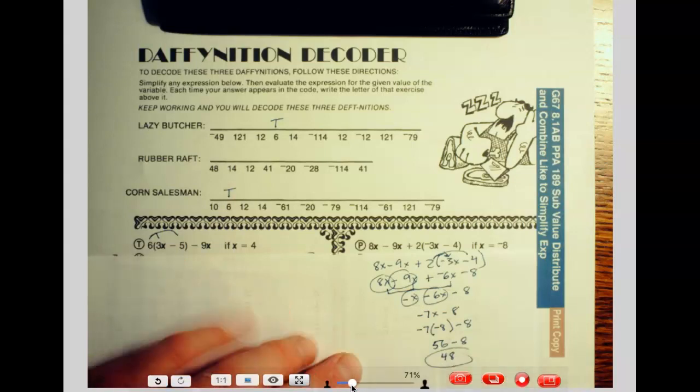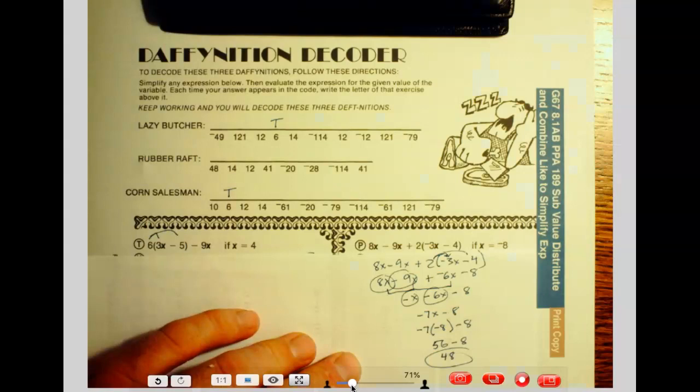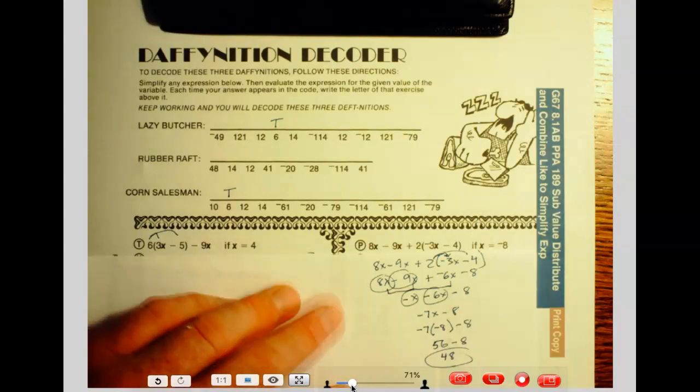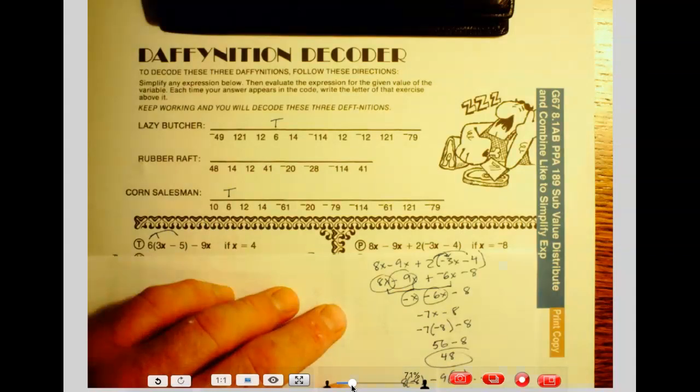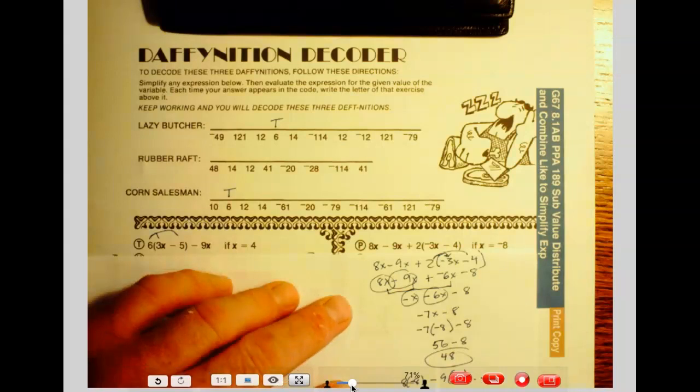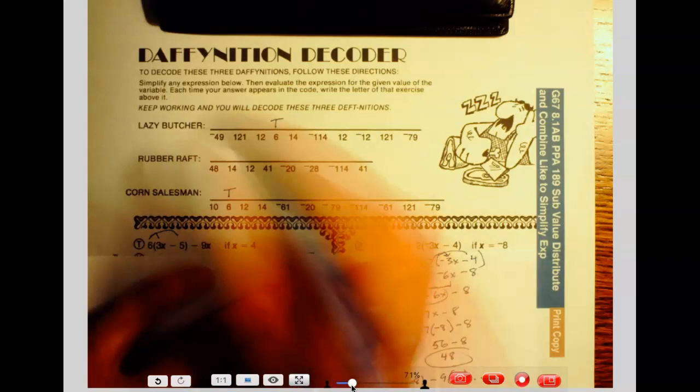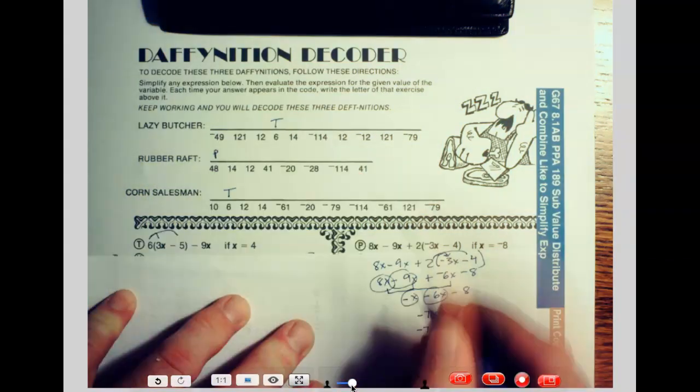So it takes a little work. I like it. I think it's easier than substituting in all of the other variables. Otherwise you'd have 8 times negative 8, minus 9 times negative 8, and so on. Okay, alright, let's see if we've got that answer up there. 48. 48, we're going to put in a P.